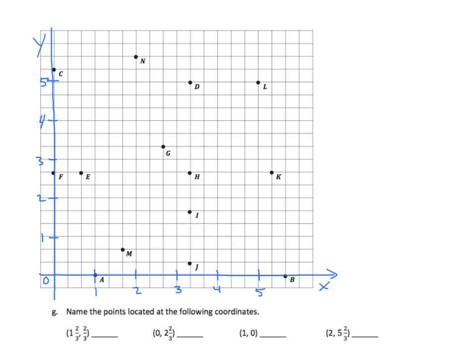In this slide we have task 2g. Instead of finding the ordered pair, we're given the ordered pair and need to find the points. The first one has an x-coordinate of 1 and 2-thirds and a y of 2-thirds. Going to 1 and 2-thirds on the x-axis, then up 2-thirds, or finding the intersection of those lines — that is point M. For 0 and 2-thirds along the x-axis, an x value of 0 means we're right on the y-axis. Going up to 2 and 2-thirds, the value is F.